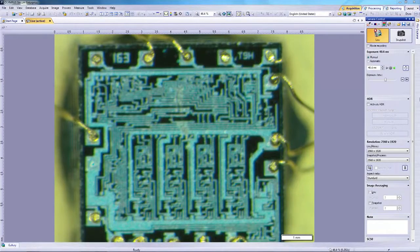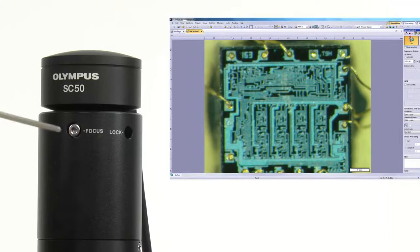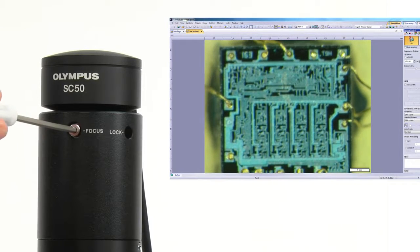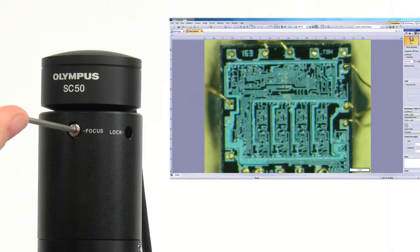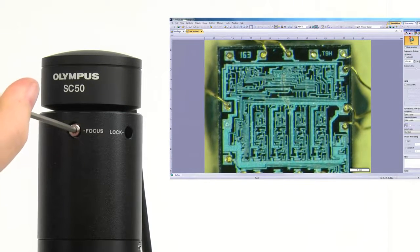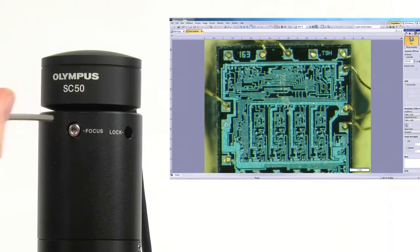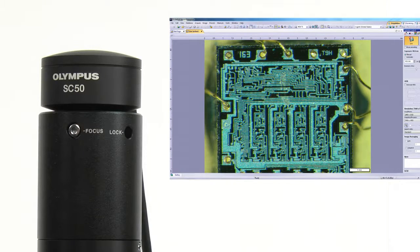Display the image on the monitor. If the image on the monitor screen is blurry, a parfocality adjustment is required. To adjust, simply turn the focus dial on the camera adapter until the image on the monitor screen is in focus. If your camera adapter has a locking mechanism, lock it into place.